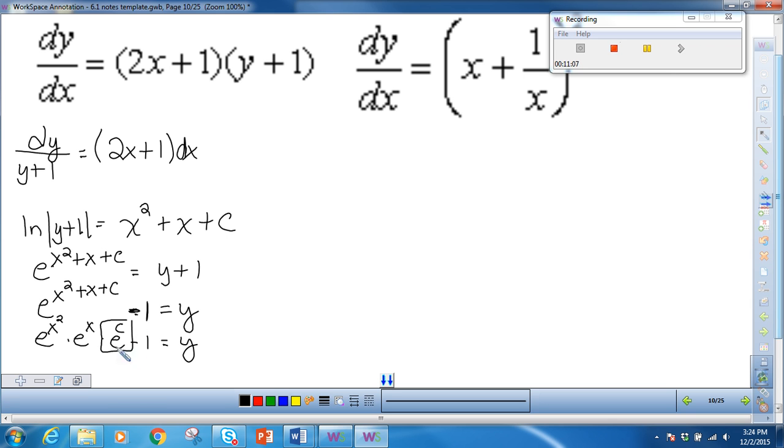Because e to the c is a constant, I can write this as, let me use a different constant. So I'm going to say e to the c is a constant k. So I can write this as k and go back to this form and write it as e to the x squared plus x minus 1.